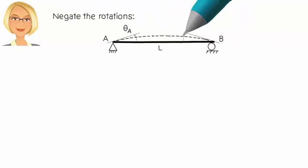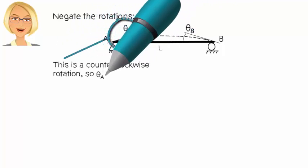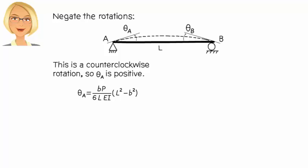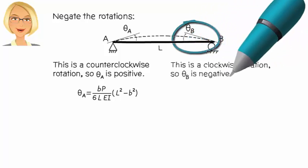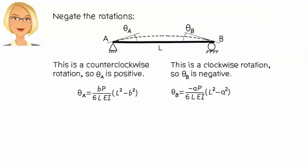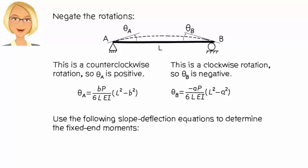Then, we negate the rotations to get this. Since this is a counter-clockwise rotation, we consider it to be positive. And we consider this to be a negative rotation since it is clockwise. Now we use these slope-deflection equations to determine the fixed-end moments.